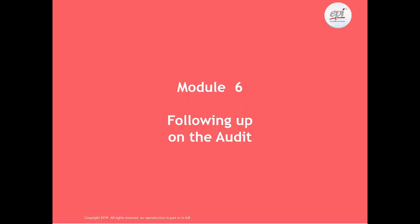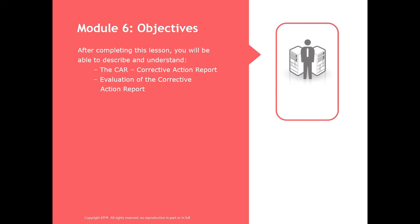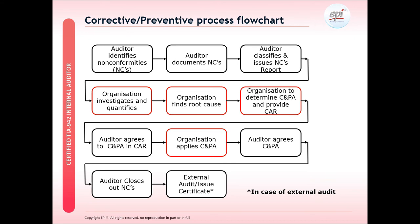In Module 6, we will look at how to follow up on the audit and the audit progress. Participants should be able to describe and understand what a corrective action report is, how corrective action plans are created, and how to evaluate the corrective action report or plan from the auditee. This slide shows the overall process from the auditor identifying nonconformities all the way through to external audit and issue of certificate. It is up to the organisation to investigate and quantify what corrective action to put in place.